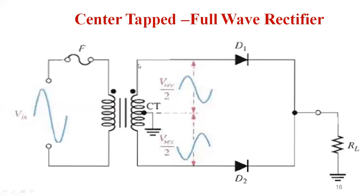As the voltages are reversed, the upper terminal becomes negative and the lower terminal becomes positive. So as the upper terminal goes negative, diode D1 becomes reverse biased and turns off. As the lower terminal becomes positive, diode D2 becomes forward biased and conducts. Current flows from the transformer through D2 through the load to ground. This is how the negative half cycle affects the operation of the circuit.